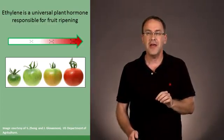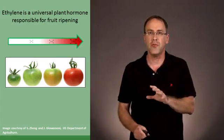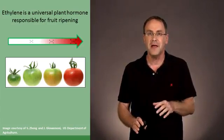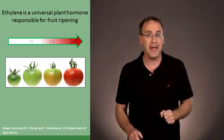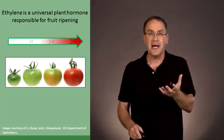And we now know that ethylene is a universal plant hormone found in all plants necessary for fruit ripening. So, for example, if we take a tomato, it gets to its normal size,